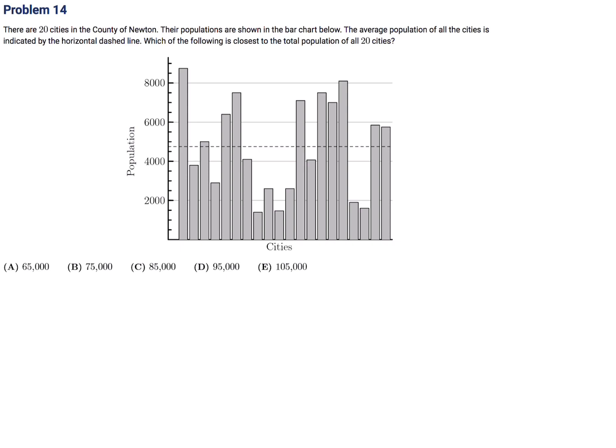There are 20 cities in the county of Newton, and their populations are shown in a bar chart. The average population is indicated by a horizontal dashed line. To find the total, take the average and multiply by 20. The scale shows 4,000 and 6,000 with four bars between each 2,000 increment, meaning each bar represents 500.